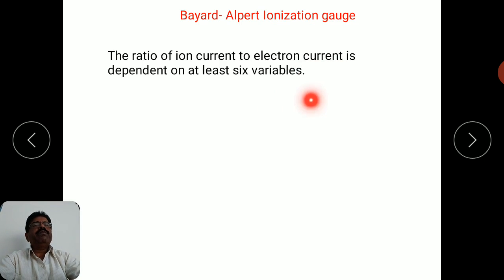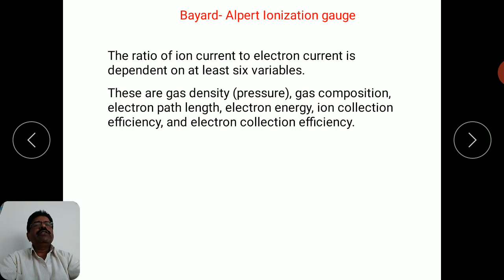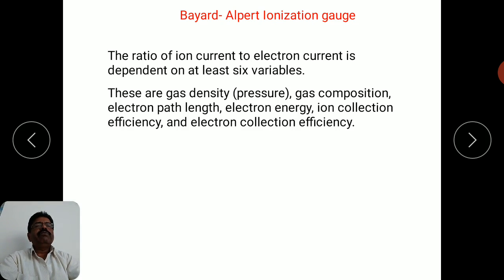The six important parameters are: first, gas density — obviously very important because the number of gas molecules decides this parameter, and more gas molecules means more possibility of ionization. Second, gas composition — which particular gas molecules are present.